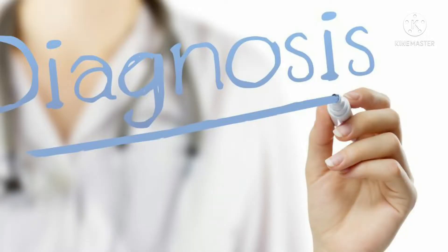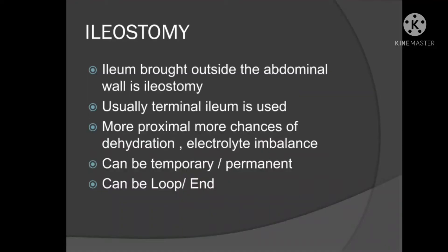The choices are: is it an ileostomy or is it a colostomy? Let's try to understand the difference. An ileostomy is when you make a stoma from the ileum, and when you make it from the colon, it is a colostomy.